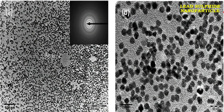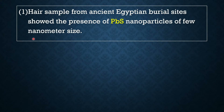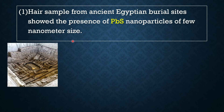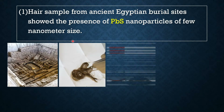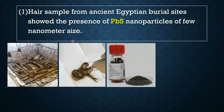This is a lead sulfide nanoparticle, and ancient people used this nanoparticle for different purposes. Hair samples from ancient Egyptian burial sites showed the presence of lead sulfide nanoparticles of a few nanometer size. You can see here — this is an ancient Egyptian burial site, and when hair samples were taken from it, they showed the presence of lead sulfide nanoparticles.